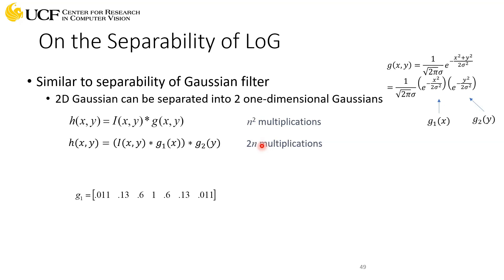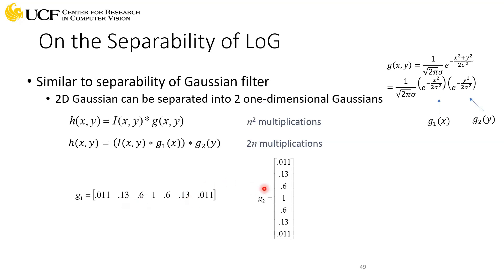We have already seen what a two-dimensional Gaussian kernel looks like. If we break it down, this is going to be your Gaussian filter in one dimension — we have seen this before — so in this case this is g1 and this is g2.